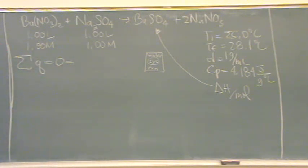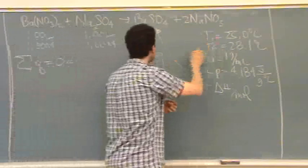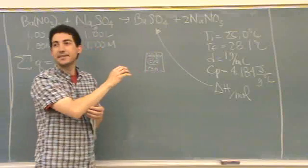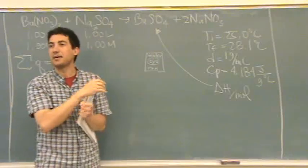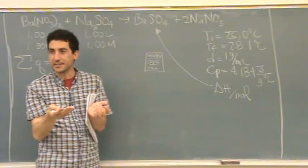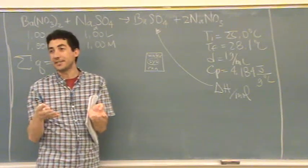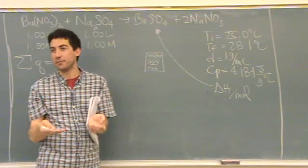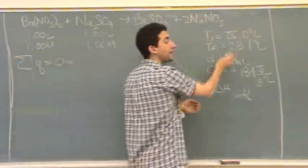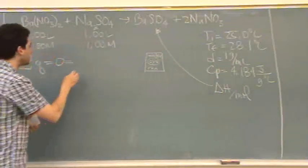So the sum of Q's equals zero. If we go through our list, is there anything that changed temperature? Yeah! There was a temperature change, it occurred in here, it wasn't the reaction per se, but what was around the reaction received that heat. So the reaction occurred, it was hot. The stuff around it warmed up. And it warmed up from 25 to 28.1. This is the Q there.